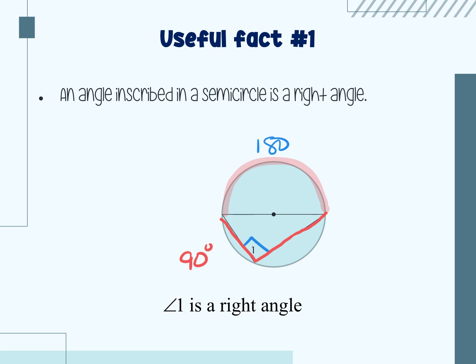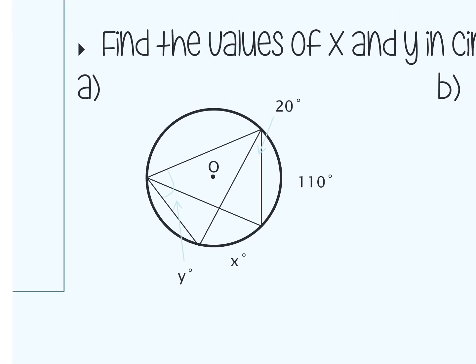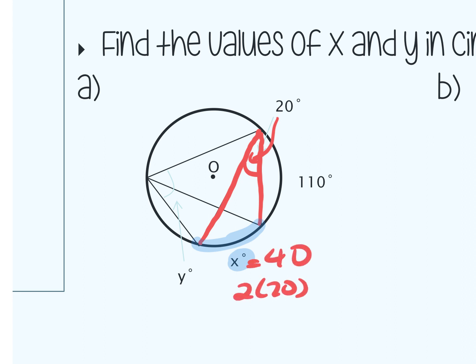Now we're going to do examples. For the first one, when you're doing the homework tonight, justify or give me the theorem that justifies why you're answering the question. I can trace over the cord forming the 20 degree angle. The intercepted arc measure x is going to be two times that angle. So x equals two times 20, which is 40 degrees.